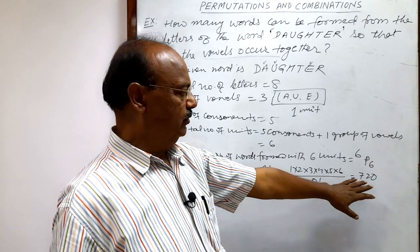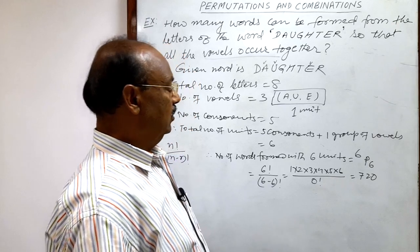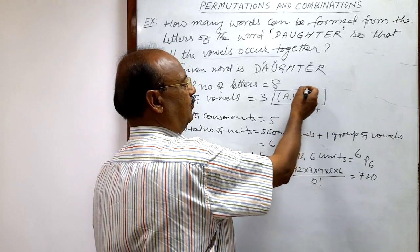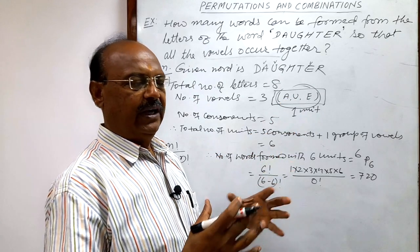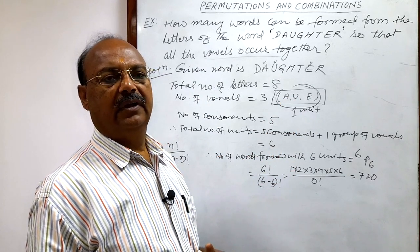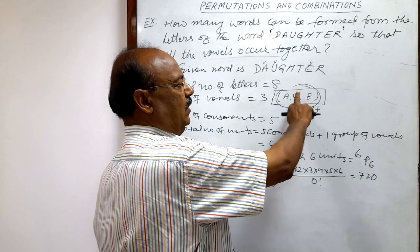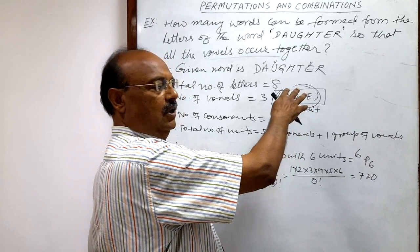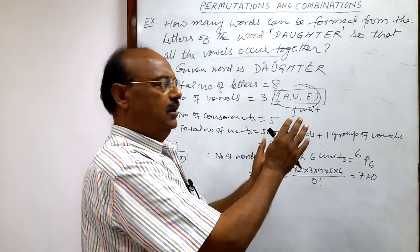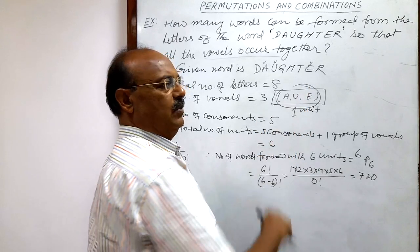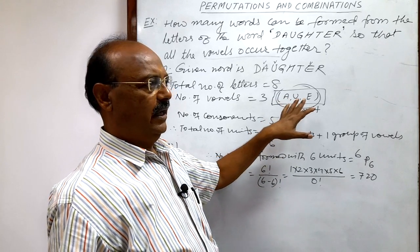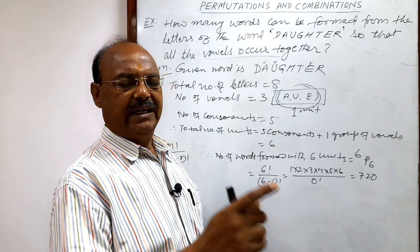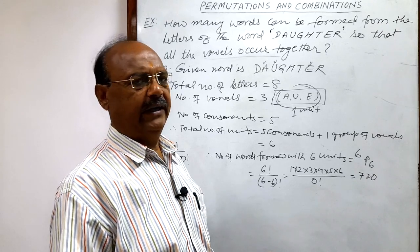Here, we have to take one more step, because this group of vowels, there is also possible of different arrangement of letters. They can interchange their places themselves, although they will remain together, but they can interchange their places. And here number of vowels is 3, and they can arrange in how many ways? 3P3 ways, or directly 3 factorial ways.